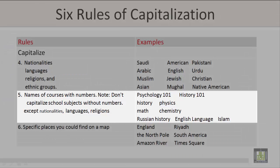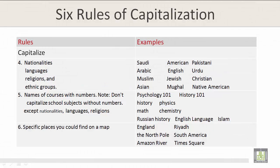Rule number five: names of courses with numbers. Note: don't capitalize school subjects without numbers. The exceptions are nationalities, languages, and religions. For example, Psychology 101 and History 101 are capitalized as course names with numbers. History, Physics, Math, and Chemistry are not capitalized because they are school subjects without numbers. However, Russian History, English Language, and Islam are capitalized because they are nationalities, languages, and religions.